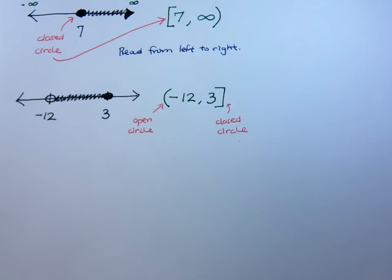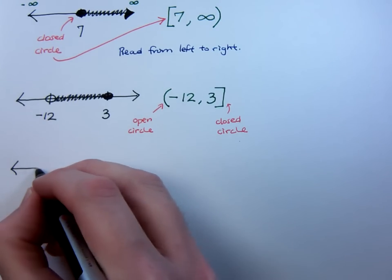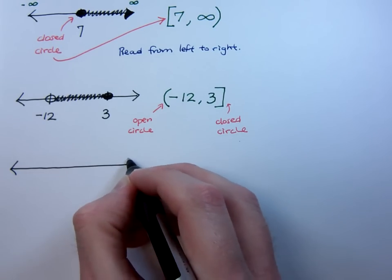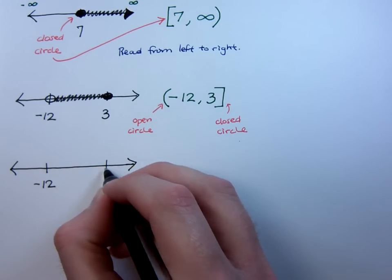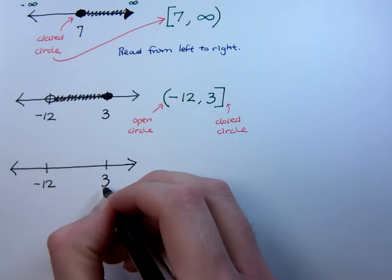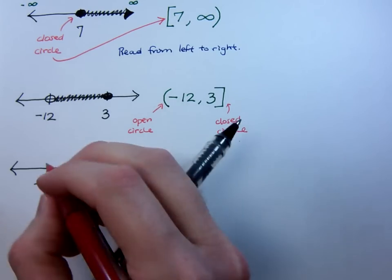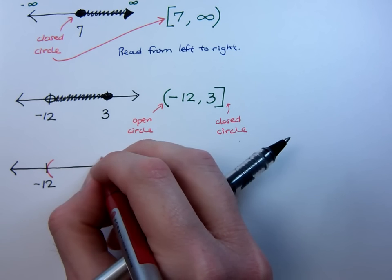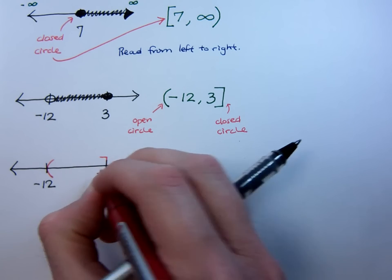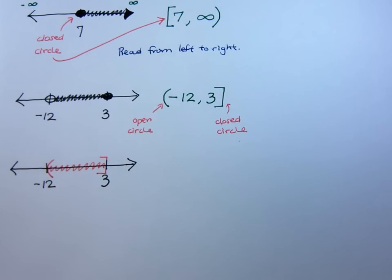You may even see it written this way in the book. Not that I have a problem with the way that the book does this, I'm just going with the way that I was taught many years ago. To express the same thing on the number line, you may see the textbook have the parentheses at negative 12, have a bracket at 3, and then everything colored in the middle. That's another way of expressing that, and that's fine.